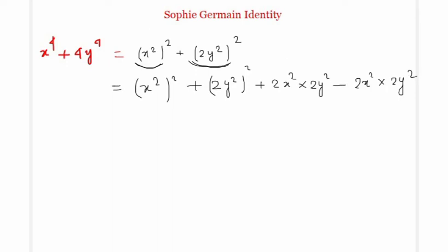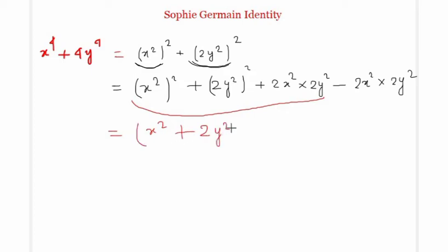Why are we doing this? So that this expression becomes a perfect square — that term is (x² + 2y²)². And what about the second term? This is 4x²y².